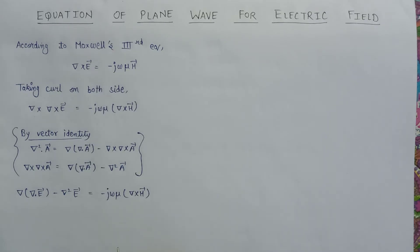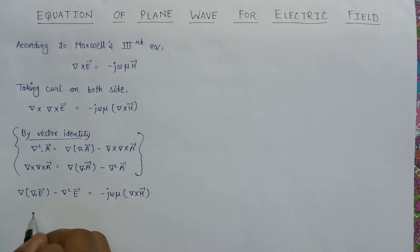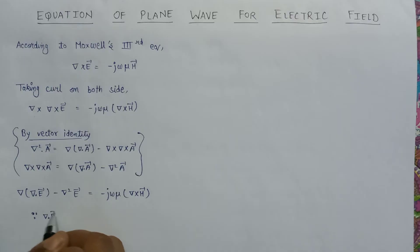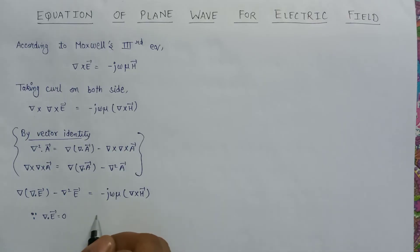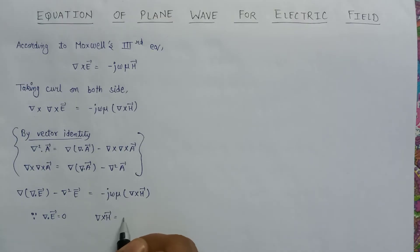Now since we discussed Maxwell's equations in phasor form, del dot E equals 0 — this is the result from Maxwell's first equation in phasor form for free space. We also know that del cross H is equal to j omega epsilon into E.